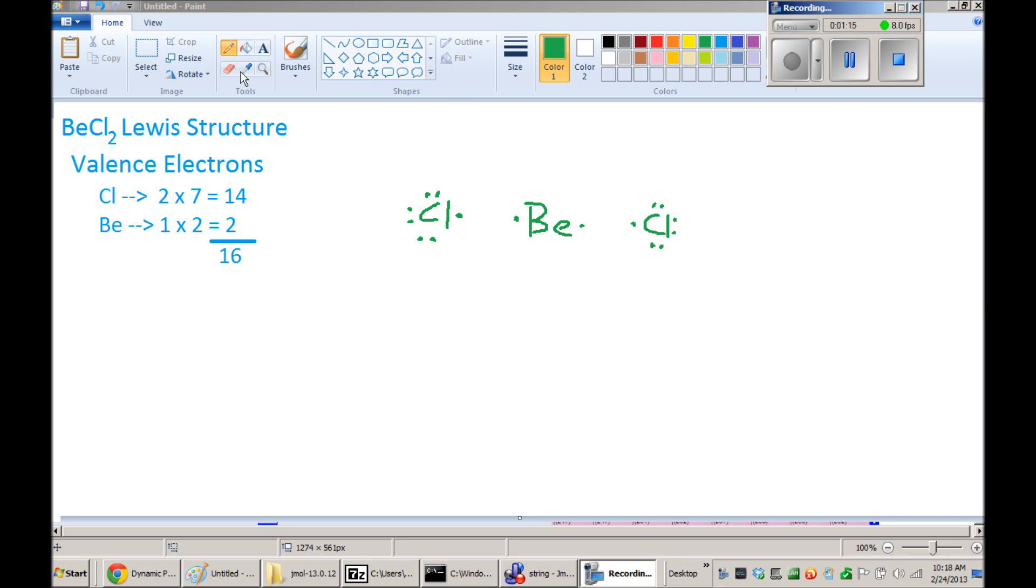So what I can do is replace non-bonding electrons, two of them, with a bond. And that now fills chlorine's octet because there's two, four, six non-bonding electrons and two bonding electrons in this bond. So that's eight electrons total.